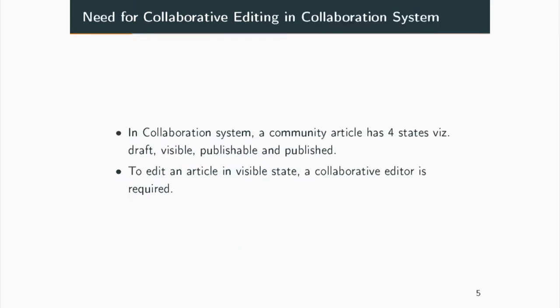Why do we need it in our system? In the collaboration system, when a community article is created it passes through four stages: draft, visible state, publishable, and published state. When the article is in the visible state, it is open for editing by all users, so we need a platform where users can edit the document simultaneously. That is where the collaborative editor comes into play.